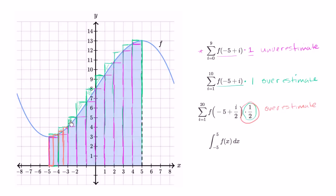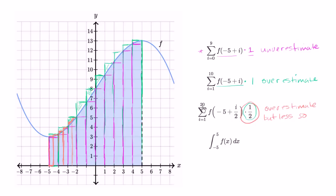But it's going to be less of an overestimate than the previous one, because that one had all of this extra green space above the function. Now we have a lot less extra space above the function. So it's a better estimate, but it's still going to be an overestimate — because over this interval where the function is increasing, the right-handed rectangle gives us an overestimate. This is a little more precise because we're using narrower rectangles. And this last expression is the definite integral from negative five to five of f of x dx — essentially the limit as we take the widths smaller and smaller, approaching an infinite number of rectangles. This is the actual area depicted in blue.